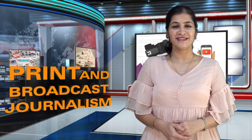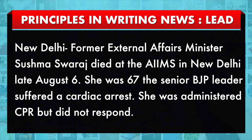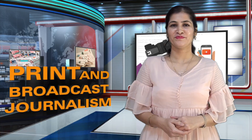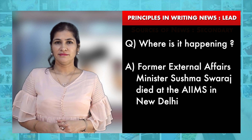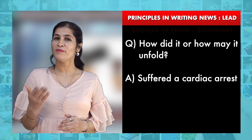Here is an example of a good lead: 'Former External Affairs Minister Sushma Swaraj died at AIIMS in New Delhi late on August 6. She was 67. The senior BJP leader suffered a cardiac arrest. She was administered CPR but did not respond.' With this lead, you can get answers for the five W's and one H — who are the individuals, what is the news story about, where is it happening, when did it happen, why is it happening, and how did it or how may it unfold.